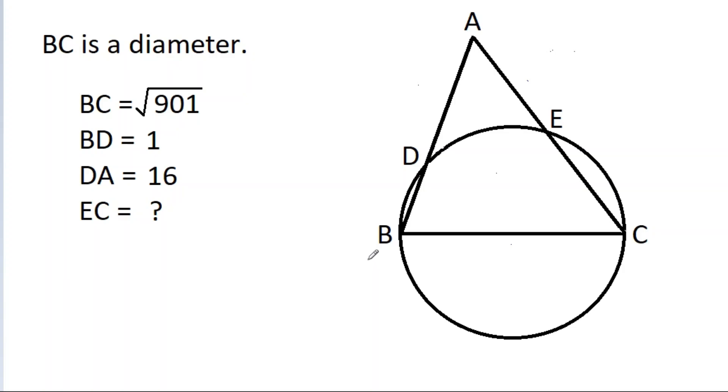In this video we have given a circle where BC is a diameter and length of BC is root under 901, and BD is equal to 1 and DA is equal to 16, and we have to find the value of EC.